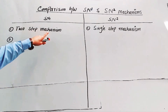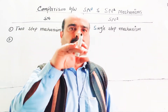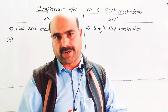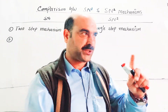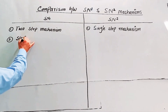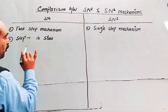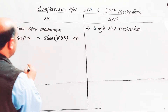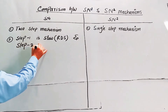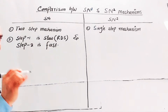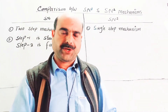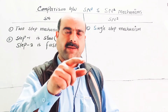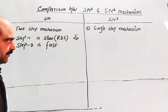In SN1, being a two-step mechanism: step one is slow because it is a bond-breaking step. The bond between the halogen atom and the carbon of the alkyl group is broken. Bond breaking is an endothermic process, so step one is slow and is the rate-determining step. Step two is fast — the attacking nucleophile forms a new bond with the carbonium ion, which is a bond-making, exothermic process.